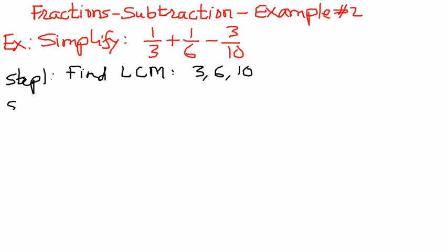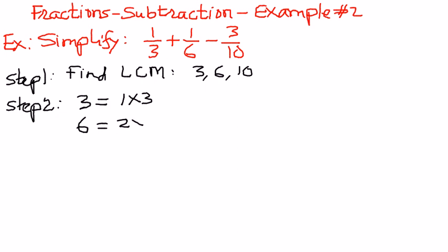Step number two. We take the denominators — the numbers 3, 6, and 10 — and write them out in their prime form. The prime factorization of 3 is 1 times 3; for 6 it is 2 times 3; and for 10 it is 2 times 5.